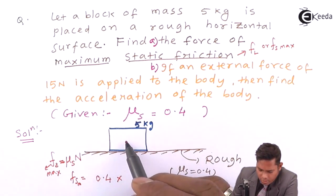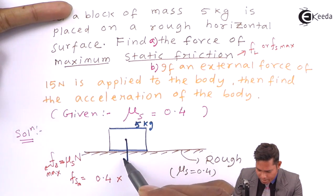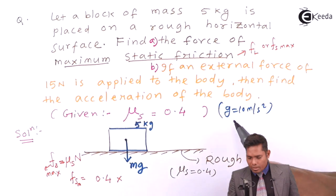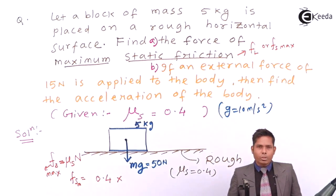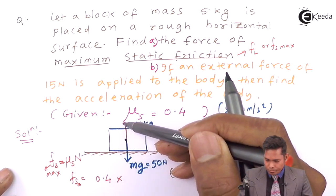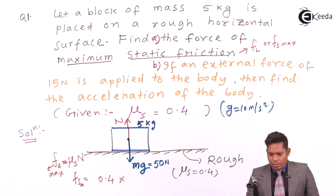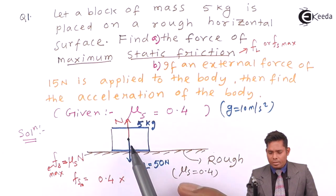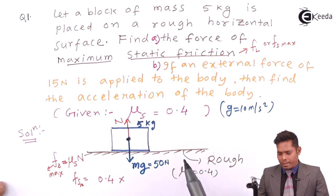Now, what is N? N is the normal reaction. Since the surface is horizontal, the block experiences weight MG acting downward — that is 5 kg × 10 m/s² = 50 Newton downward. The normal reaction equals MG = 50 Newton, since the block is not accelerating vertically. So Fs maximum = 0.4 × 50 = 20 Newton.